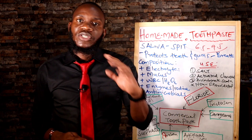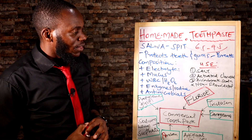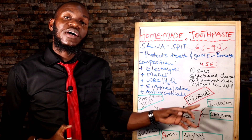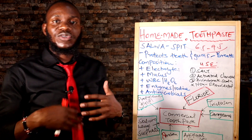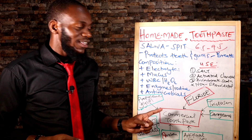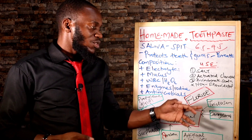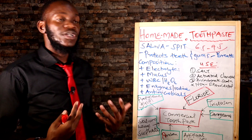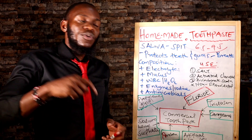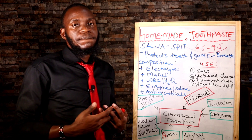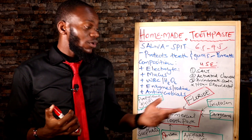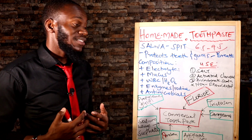Number two, we have triclosan. Triclosan is a component that is very dangerous because it was actually banned, but some toothpastes still have it. Every time you walk into a supermarket and pick a toothpaste, you should look at the ingredients and see if what I'm saying is true. Triclosan is an endocrine disruptor — it disrupts your hormones. Why would you use something that disrupts your hormones and compromises your hormone stability just for the sake of whitening your teeth? It doesn't make sense at all.